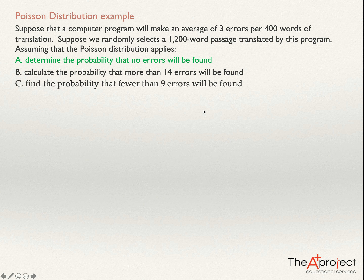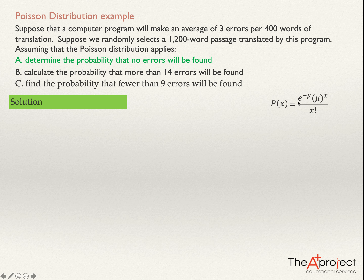So if we know that this is a Poisson distribution problem, let's write the Poisson distribution formula. The probability that the random variable takes a value x is equal to e to the power of negative mu, times mu to the power x, divided by x factorial.